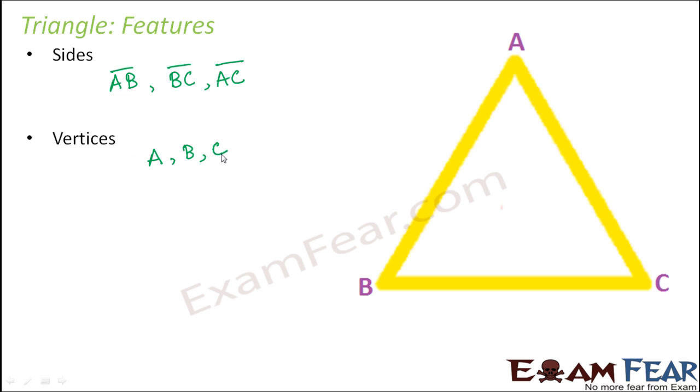All of them are adjacent vertices because since there are only three vertices, all of them are adjacent to each other. When you look at A, the adjacent vertices to A are B and C. Similarly for B, the adjacent vertices are A and C. Similarly for C, the adjacent vertices are A and B.